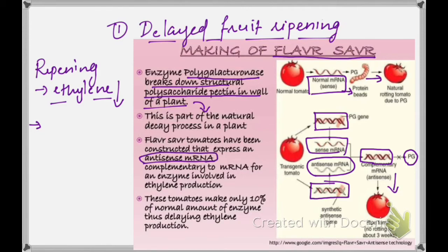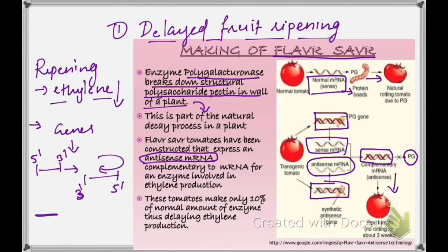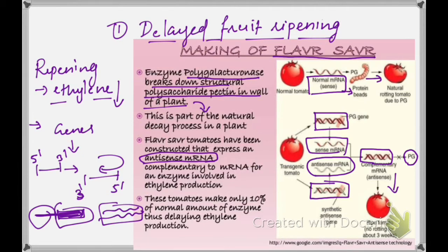Anti-sense mRNA is produced by introducing genes after rotating them 180 degrees. Suppose this is a gene for the production of a particular protein. This gene is introduced into the same genome rotated 180 degrees. The normal gene and the other gene — the same gene's copy rotated 180 degrees — produce RNAs that form a hybrid, which slows down the translation process, thereby slowing down gene expression. The tomatoes only have 10% of the normal amount of enzyme, thus delaying ethylene production.